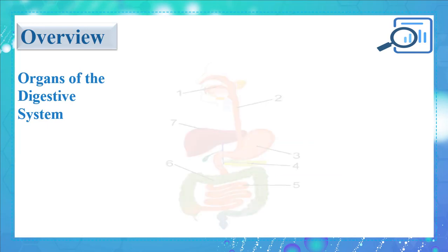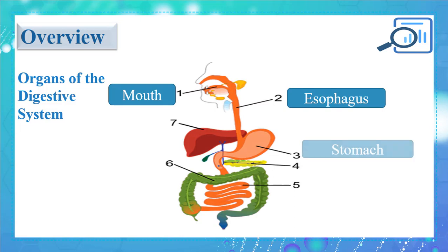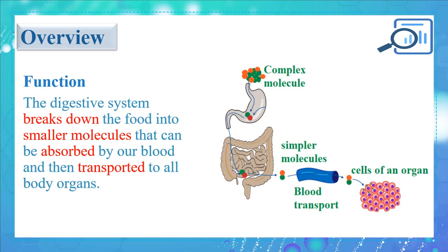Let's start by recalling the organs of the digestive system. We have the mouth, the esophagus, stomach, pancreas, small intestine, large intestine, and liver. The main function of the digestive system is to break down the food into smaller molecules that can be absorbed by our blood and then transported to all body organs.